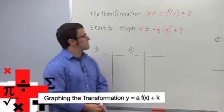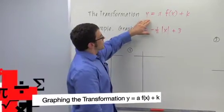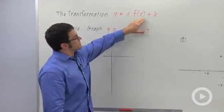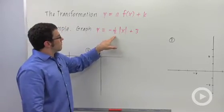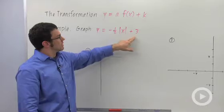We're talking about graphing transformations. Let's start with an easy transformation: y equals a times f of x plus k. Here's an example, y equals negative one-half times the absolute value of x plus 3.